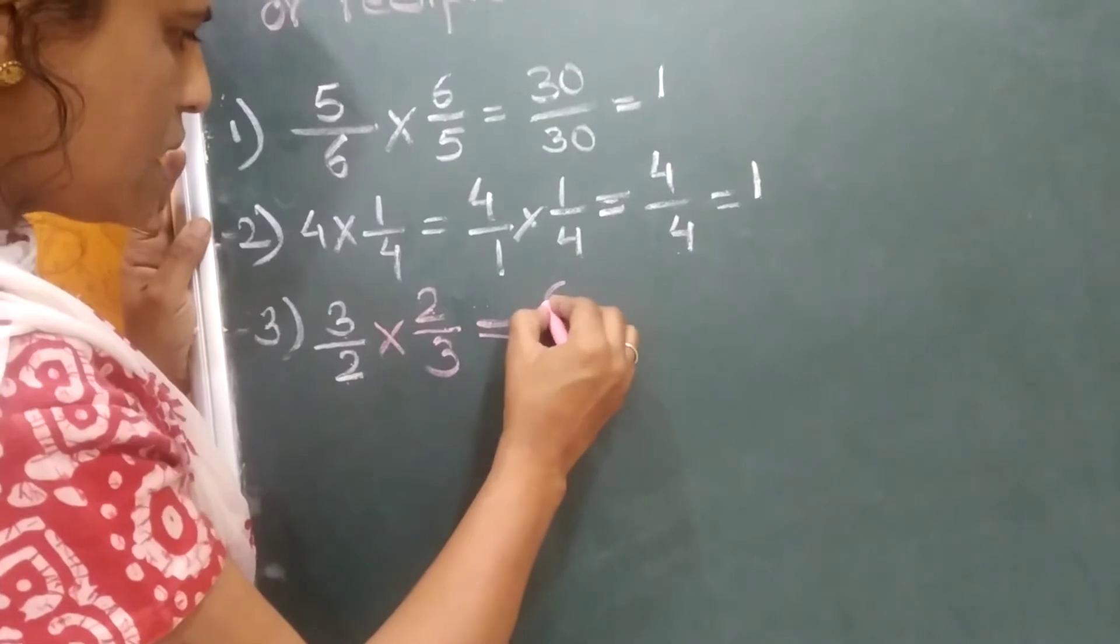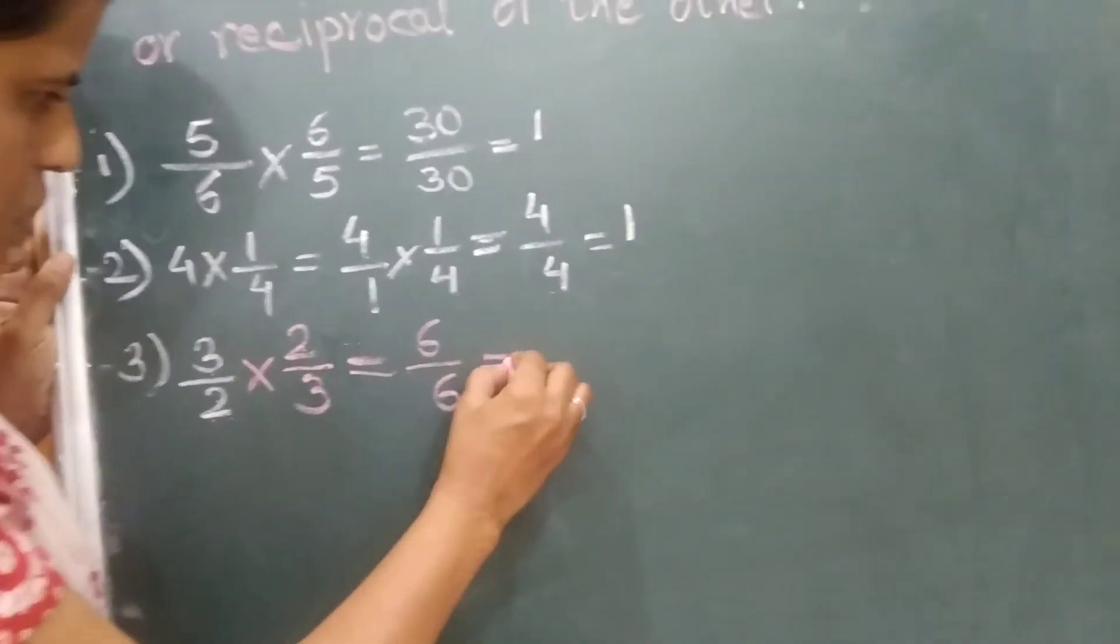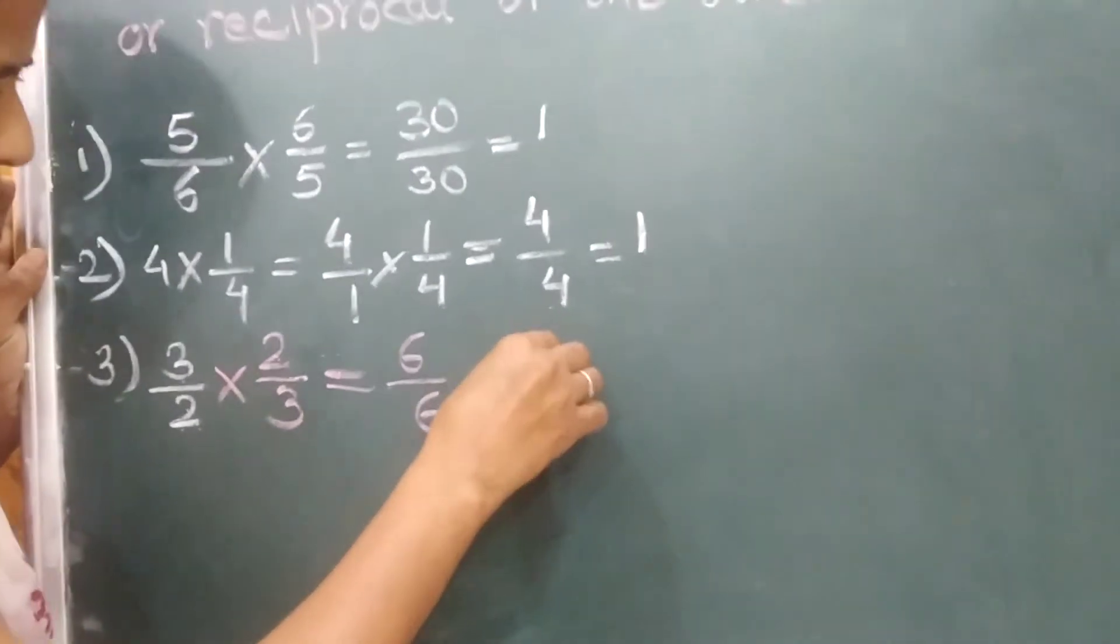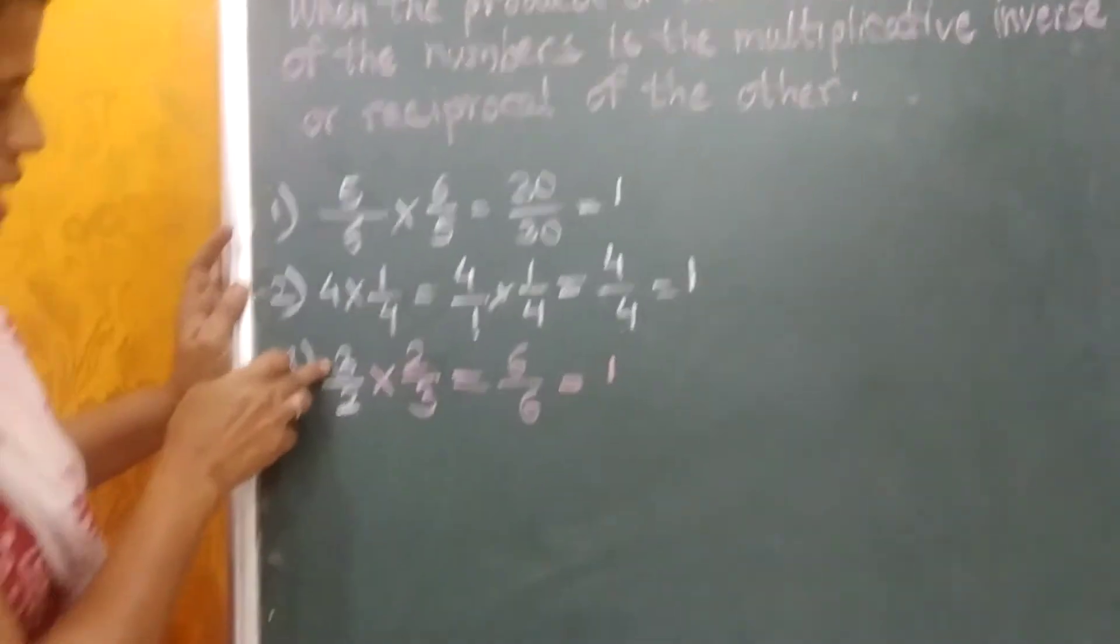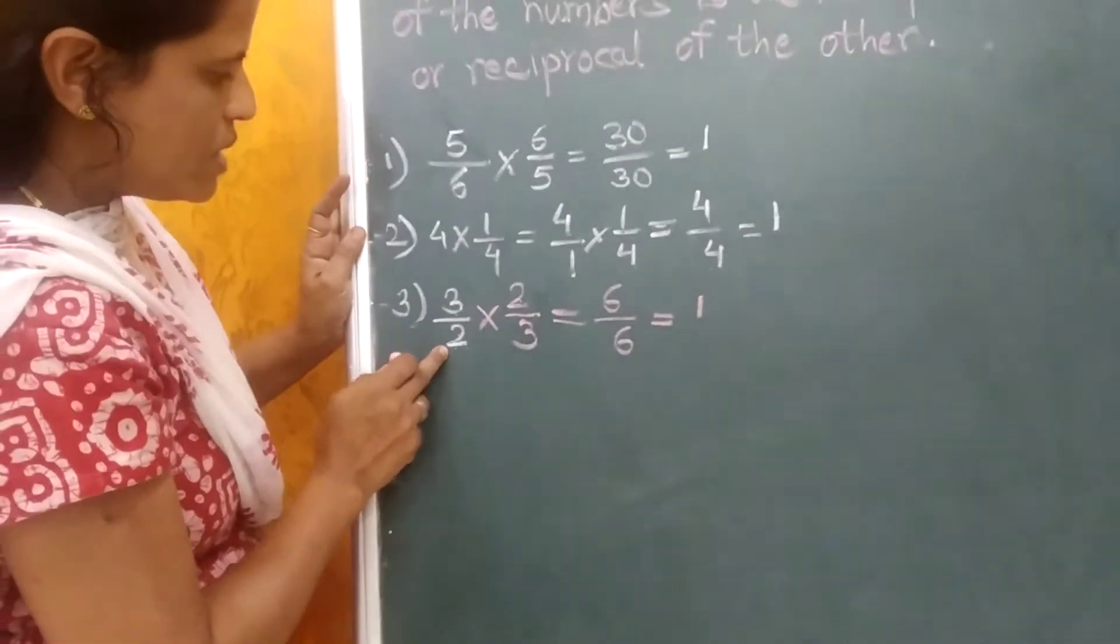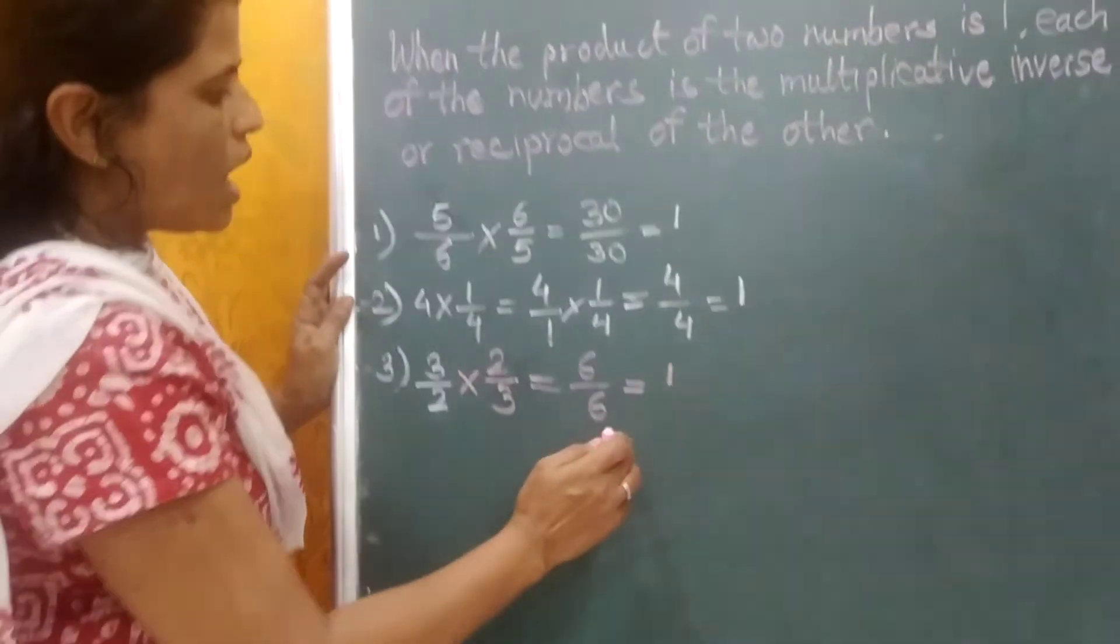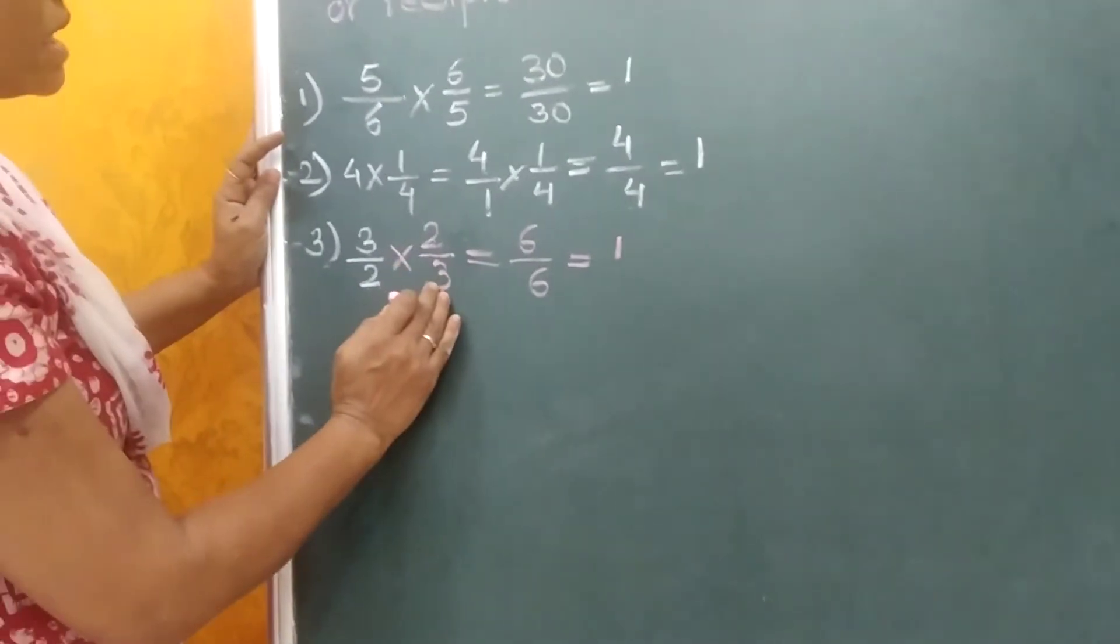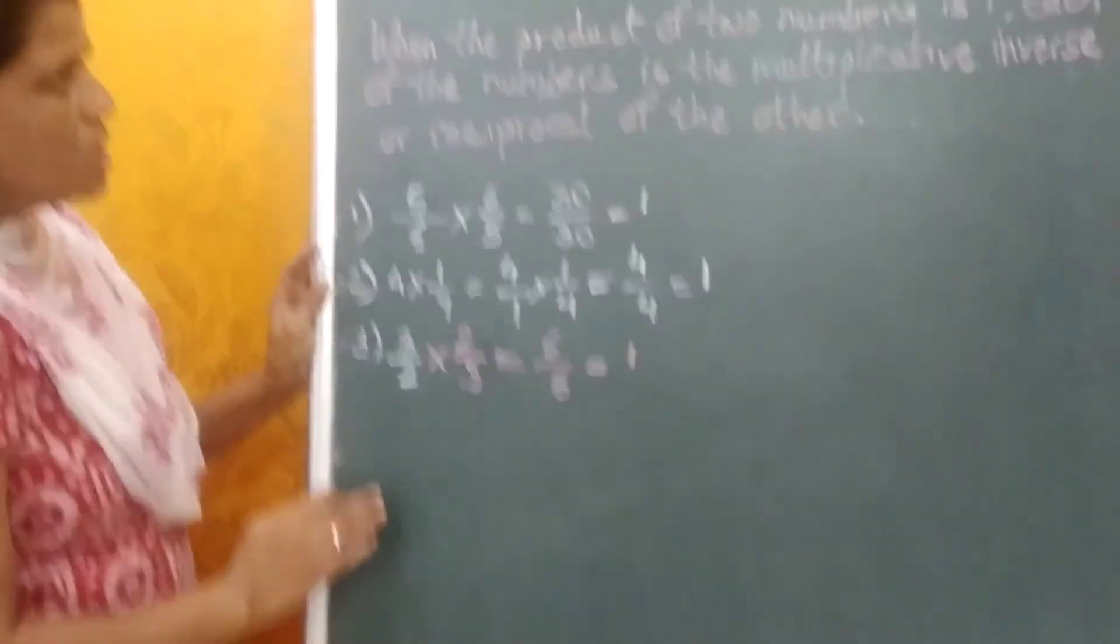So it becomes 6 upon 6, which is equal to 1. This means when we exchange the numerator and denominator of the first fraction, then we get the answer 1, which means they are reciprocal or multiplicative inverse.